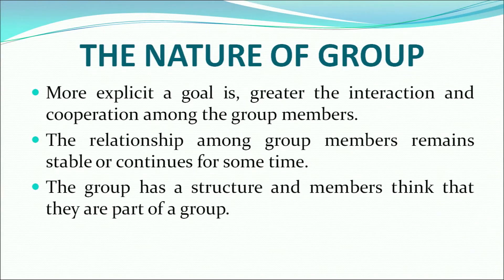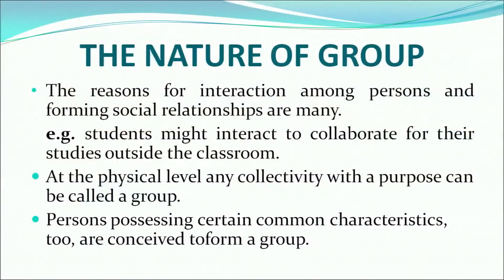The more explicit a goal is, the greater the interaction and cooperation among the group members. The relationship among group members remains stable or continues for some time. The group has a structure and members think that they are part of a group. The reasons for interaction among persons and forming social relationships are many. For example, students might interact to collaborate for studies outside the classroom. At the physical level, any collectivity with a purpose can be called a group. Persons possessing certain common characteristics are also conceived to form a group.